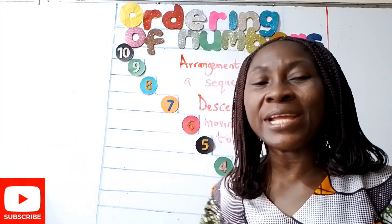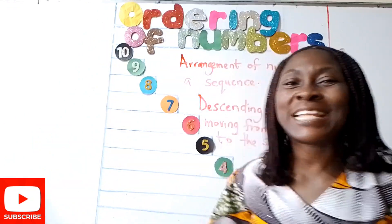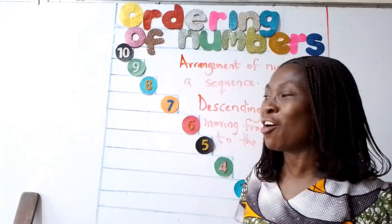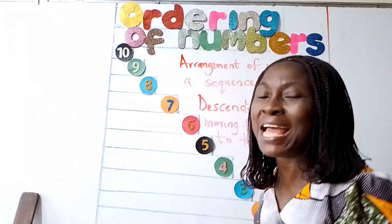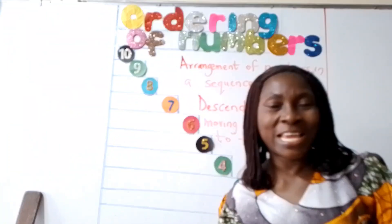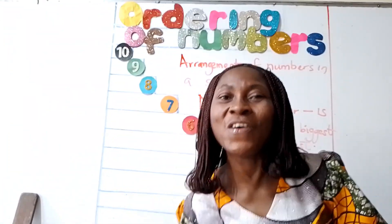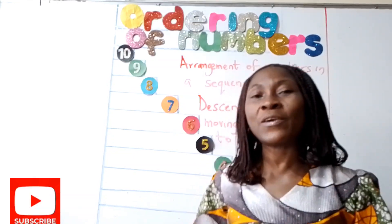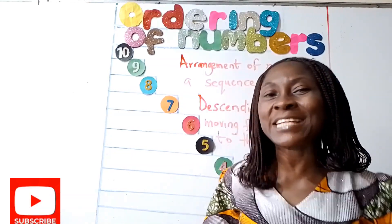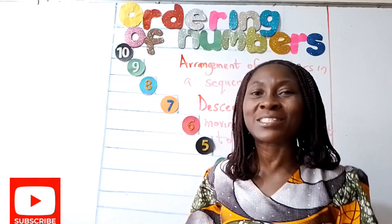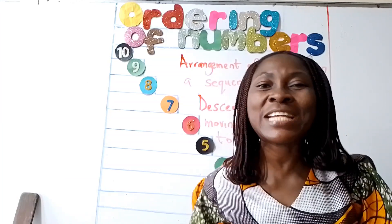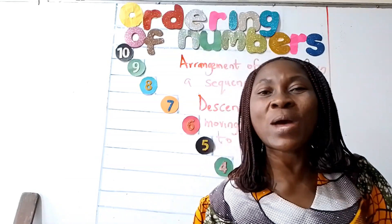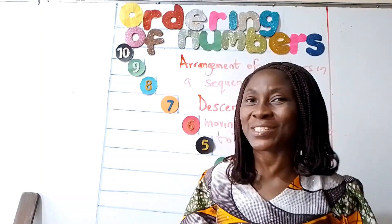1, 2, 3, 4, 5, 6, da da the numbers go. 7, 8, 9, 10, 11, 12 is what you need to know. [Song repeated twice]